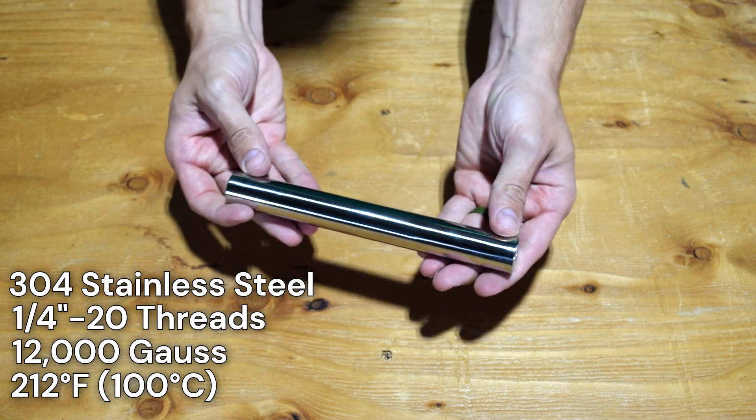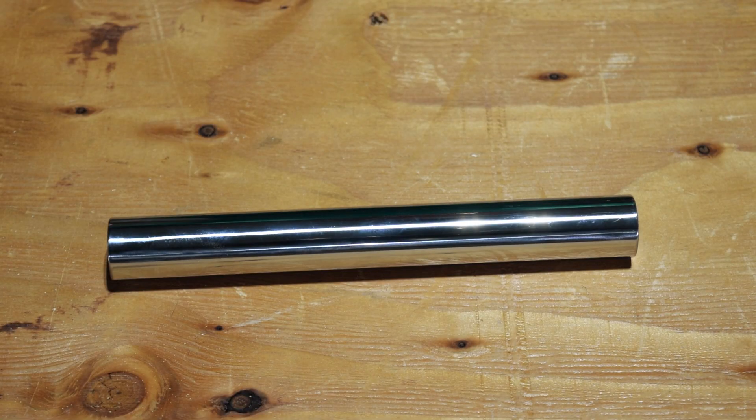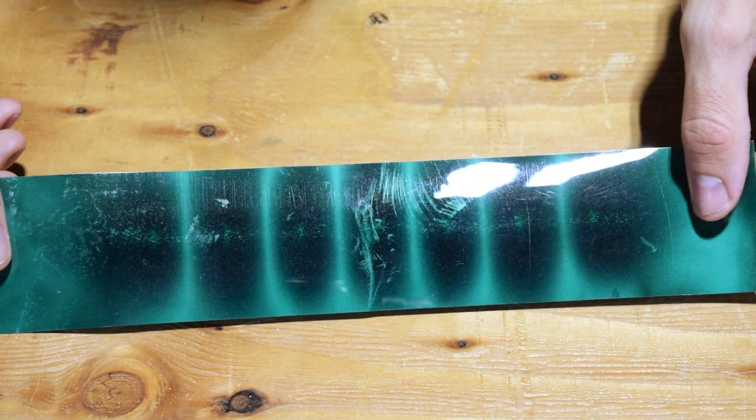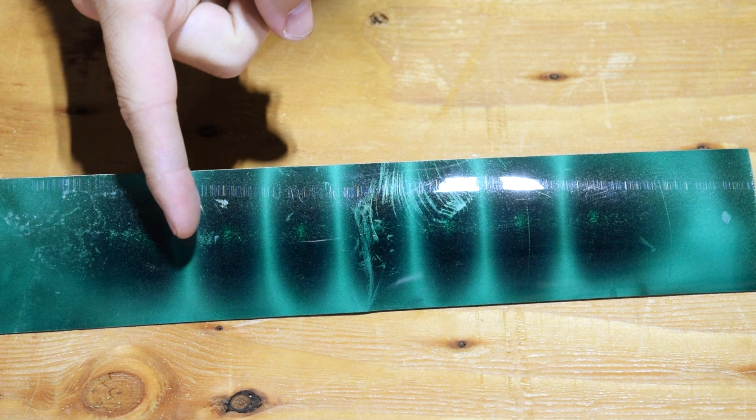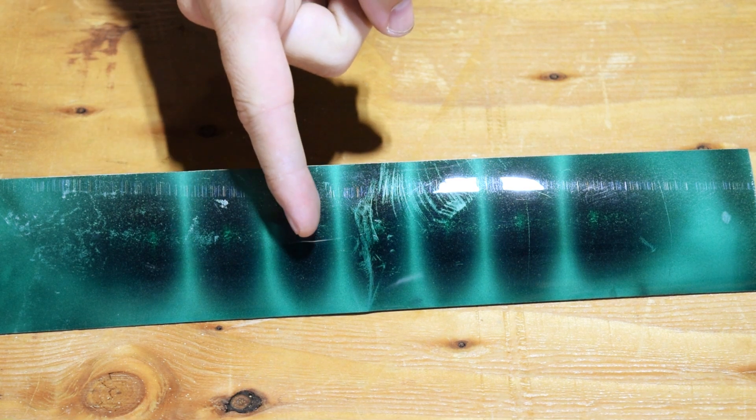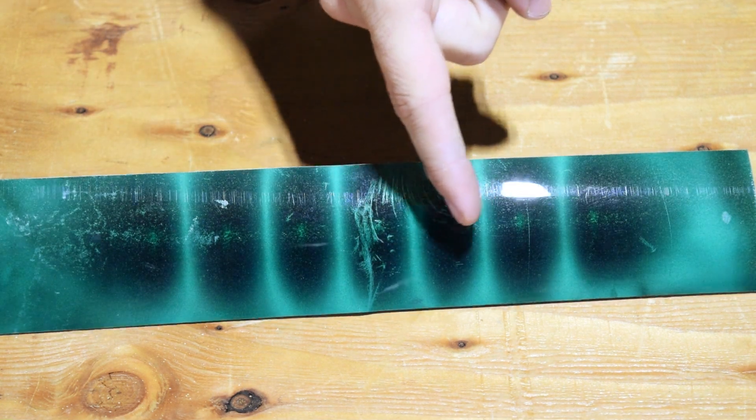Inside the stainless steel housing, there are several magnets and steel discs. Using some magnetic viewing film, you can see a magnet, then a steel disc, then another magnet, and another disc, and so on.